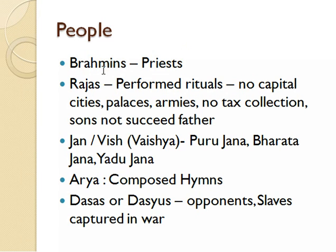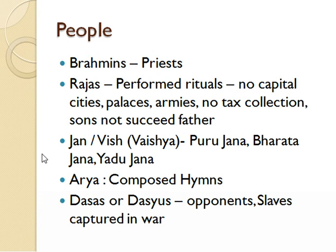The four Varna system — Brahmin, Kshatriya, Vaishya, and Shudra — came later and will be covered in upcoming chapters. Here, 'Jana' referring to groups like Purujana, Bharatajana, and Yadijana are some examples of these people.